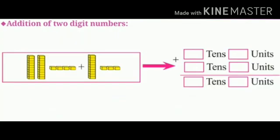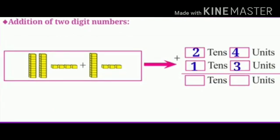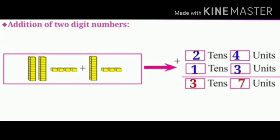Next: 2 bundles of 10 and 4 single boxes, meaning 2 tens and 4 units, plus 1 bundle of 10 and 3 single boxes, meaning 1 ten and 3 units. First add the units place, then the tens place. 4 units plus 3 units equals 7 units. And 2 tens plus 1 ten equals 3 tens. So children, the answer will be 3 tens and 7 units, which means 37.